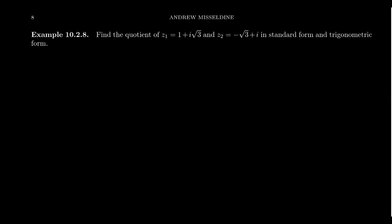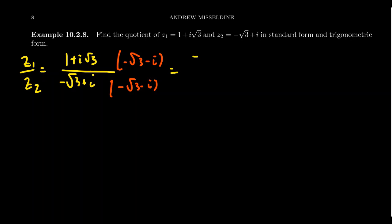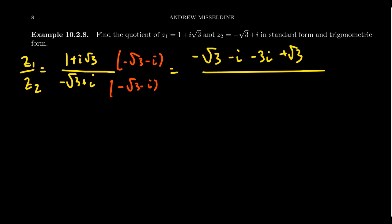Let's compare methods. Consider the quotient z1/z2 where z1 = 1 + i√3 and z2 = −√3 + i in traditional Cartesian form. The strategy is to multiply top and bottom by the conjugate of z2, which is −√3 − i. Foiling out the numerator: 1·(−√3) = −√3, then 1·(−i) = −i, then i√3·(−√3) = −3i, and finally i√3·(−i) = +√3.